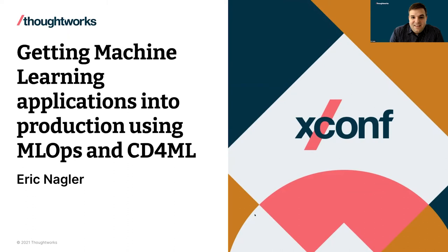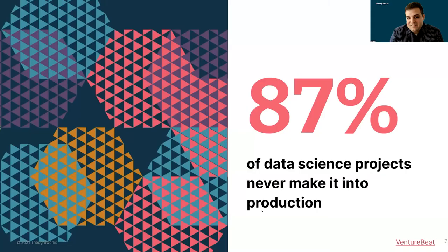Hello everybody. My name is Eric Nagler, and the name of my talk is Getting Machine Learning Applications into Production Using MLOps and CD4ML. I like to start with a general statement: productionalizing machine learning is hard. We know it's hard because of the statistic from VentureBeat that says 87% of data science projects never make it into production.